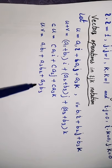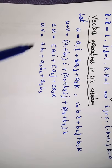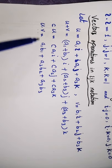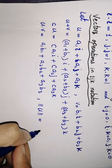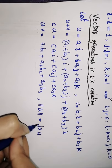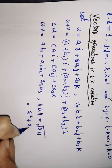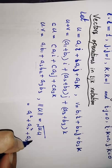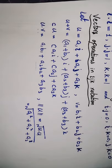We are taking the product: the i·i terms are equal to 1 and the i·j terms are equal to 0, so u·v equals a1·b1 plus a2·b2 plus a3·b3. Similarly, we can define the norm of u as the square root of u·u, which equals the square root of a1² plus a2² plus a3².